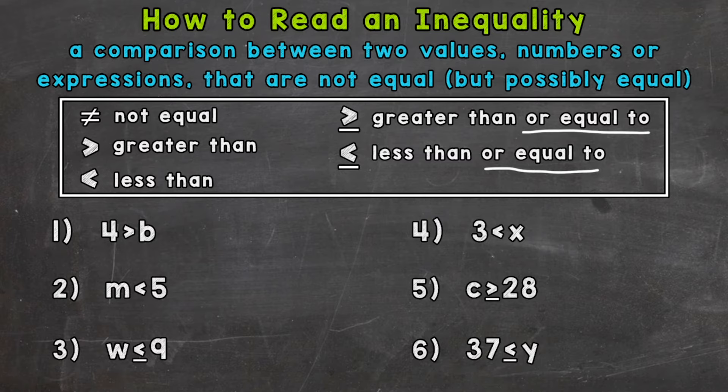So number one, we start from left to right. So we will start with the four, read our symbol, and then read the right side. So four is greater than B, and that's how you would read that inequality. Again, four is greater than B.